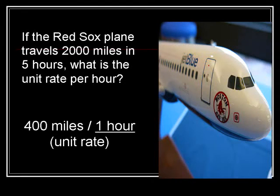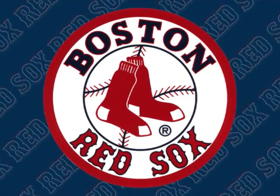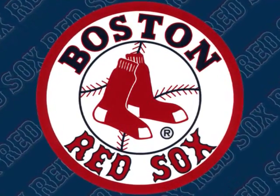Here's another example of unit rate. If the Boston Red Sox plane travels 2,000 miles in 5 hours, what is the unit rate per hour? If you reduce that fraction, it's 400 miles for every 1 hour. Since the denominator is 1 hour, it's a unit rate.